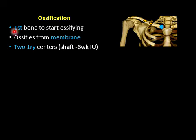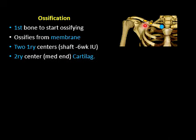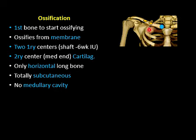Third, the clavicle has two centers of primary ossification in the shaft, whereas all other long bones have only one. Fourth, there is a secondary center of ossification on the medial end, which is cartilaginous; it begins to appear in the twenties and joins the shaft around the 25th year. Additionally, it is the only long bone situated horizontally in the body, the only long bone totally felt subcutaneously, and it has no medullary cavity.